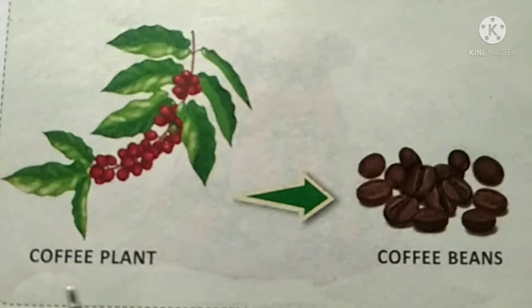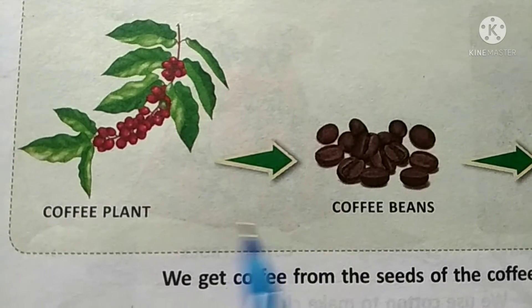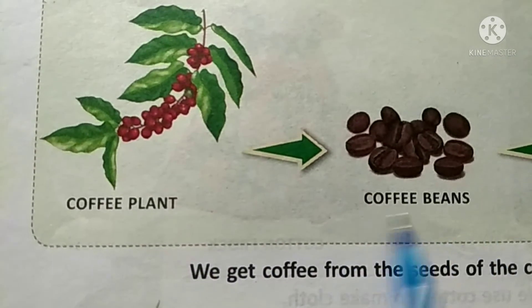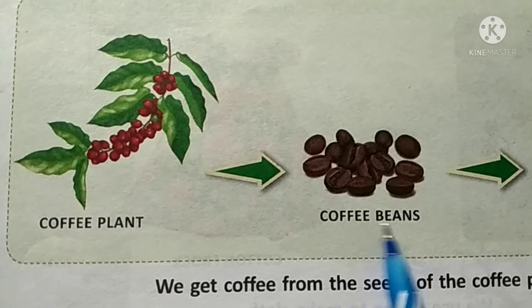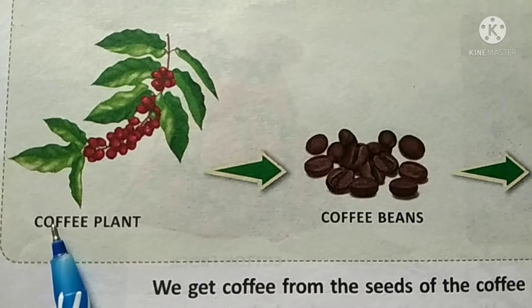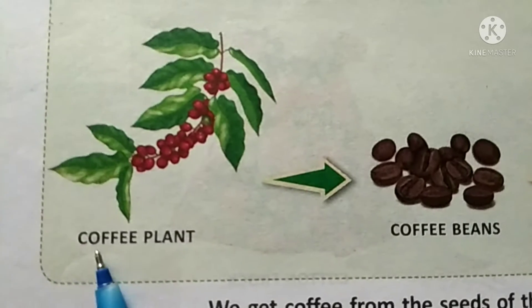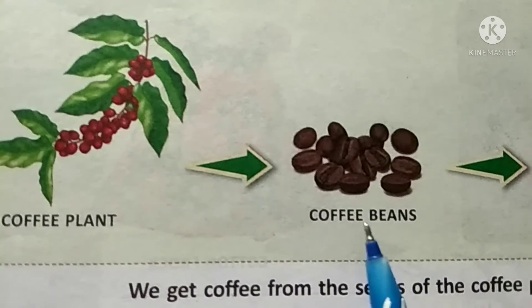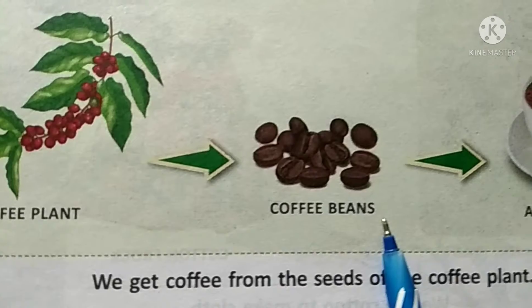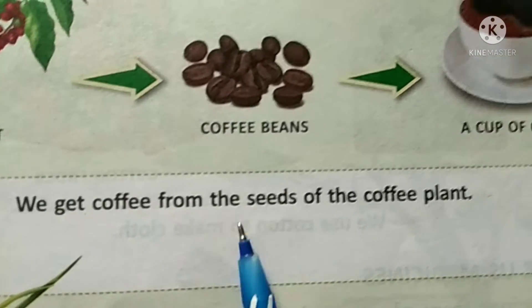Coffee plants. We get coffee beans from coffee plants. Coffee beans कहां से प्राप्त होते हैं? Coffee plants से. Coffee beans से coffee बनती है. We get coffee from the seeds of the coffee plants.